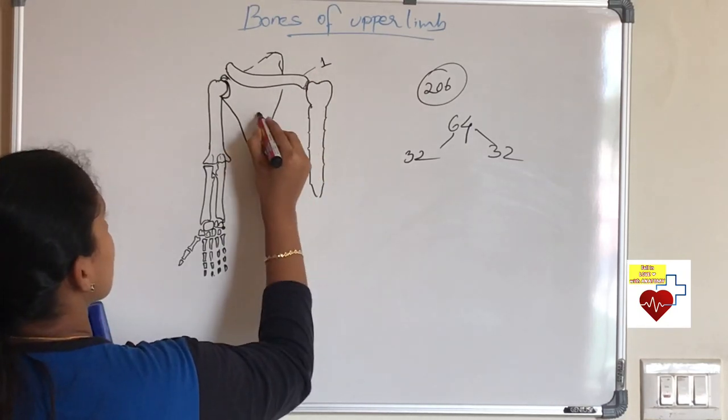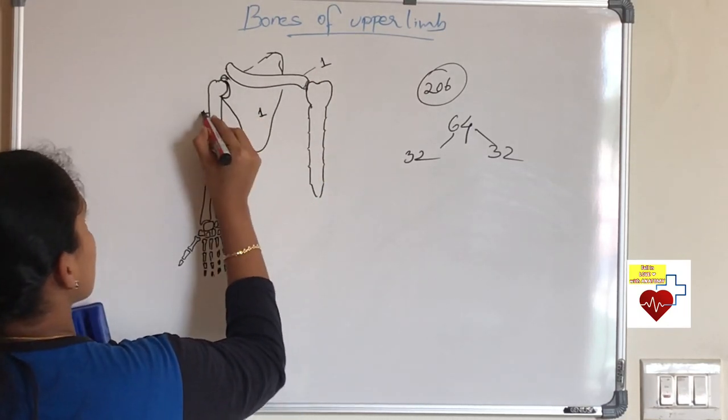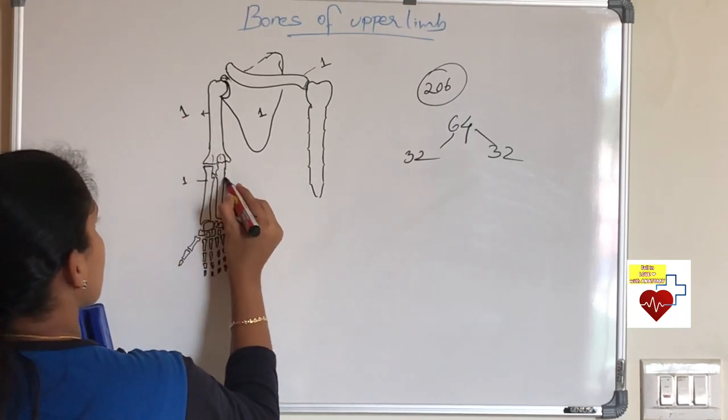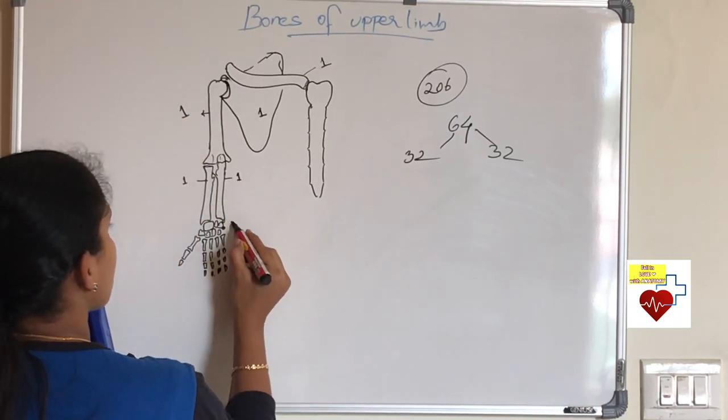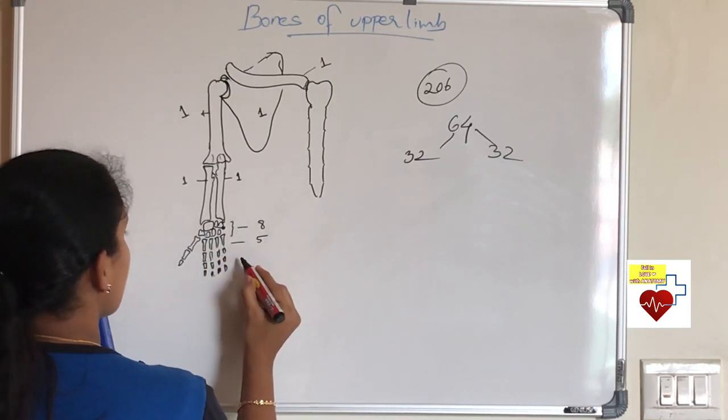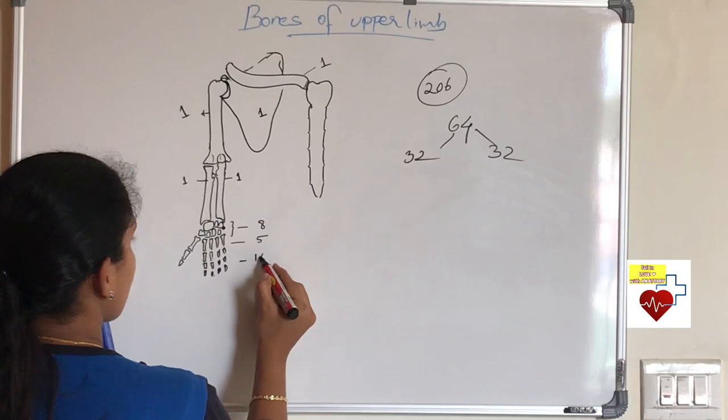What are those 32 bones? You have one clavicle, one scapula, one humerus and one radius which is forearm bone, one ulna. Now we have eight carpal bones, five metacarpals and 14 phalanges.